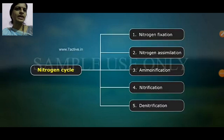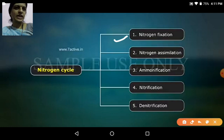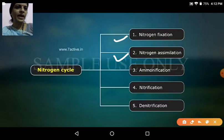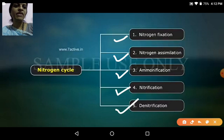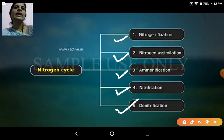This cyclic process of the nitrogen cycle involves 5 steps. The first step is nitrogen fixation, the second step is nitrogen assimilation — how atmospheric nitrogen is converted into organic form and brought into use — the third step is ammonification, the fourth step is nitrification, and the fifth step is denitrification. Note these five steps in your notebook.